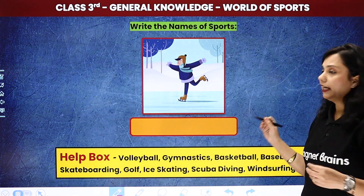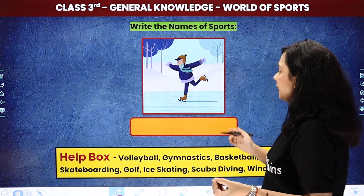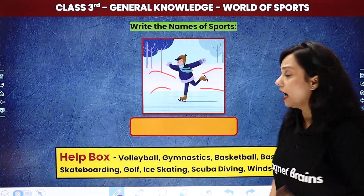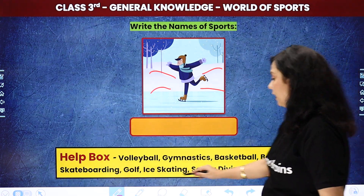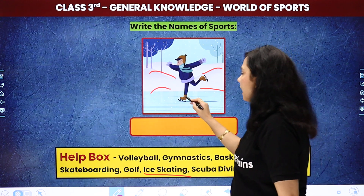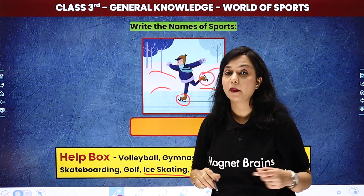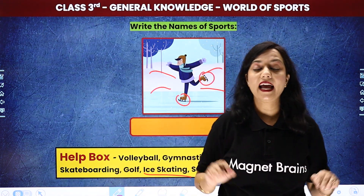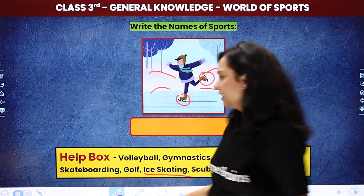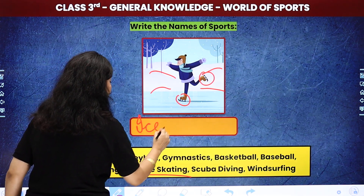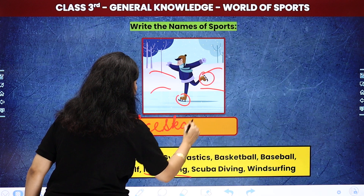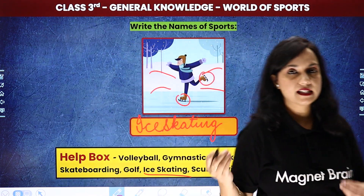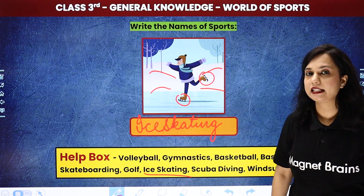Now, what is this? Which sport is this, children? You can see there is a lot of snow in the background. So obviously this will be a cold-weather sport. We call this ice skating. Here you can see it written: ice skating. The difference is that you have skates on your feet, children, but you are doing it on ice — not on a normal surface. That is why this sport is called ice skating, because you are skating on the ice.